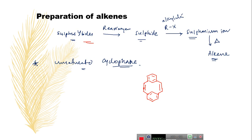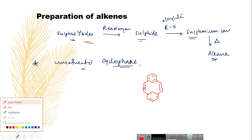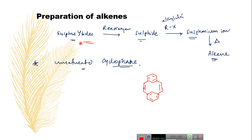Another application of sulfur ylides is the preparation of alkenes. The synthetic strategy involved is: first, sulfur ylides undergo rearrangement and give sulfides. These sulfides, as we know, undergo alkylation with alkyl halides to produce a sulfonium ion. This sulfonium ion, under thermal conditions, loses the sulfide, which produces alkenes.